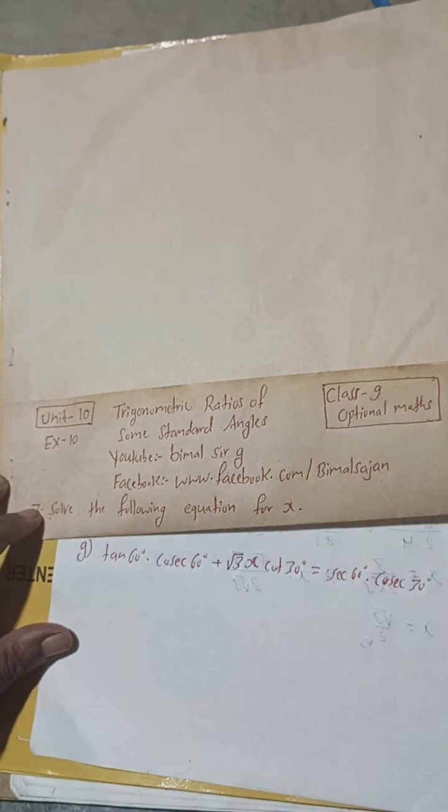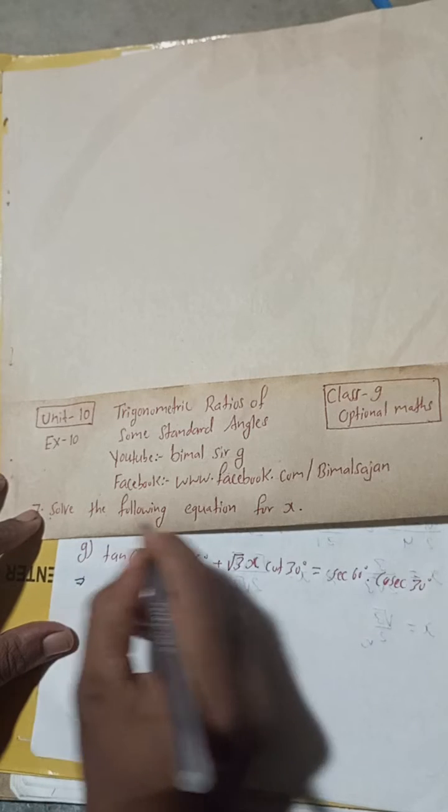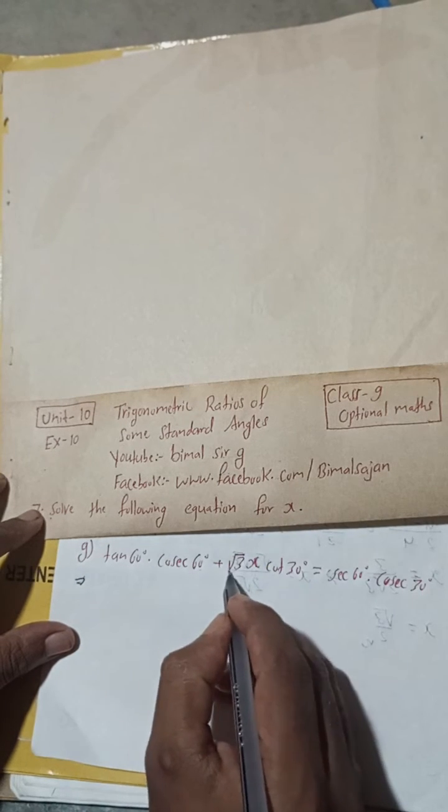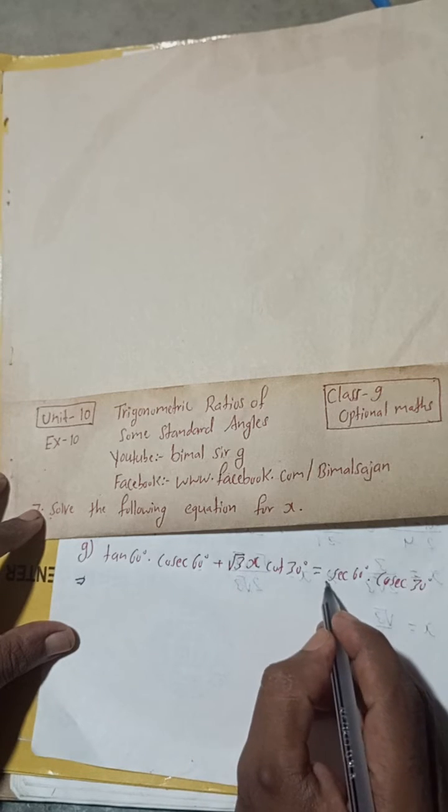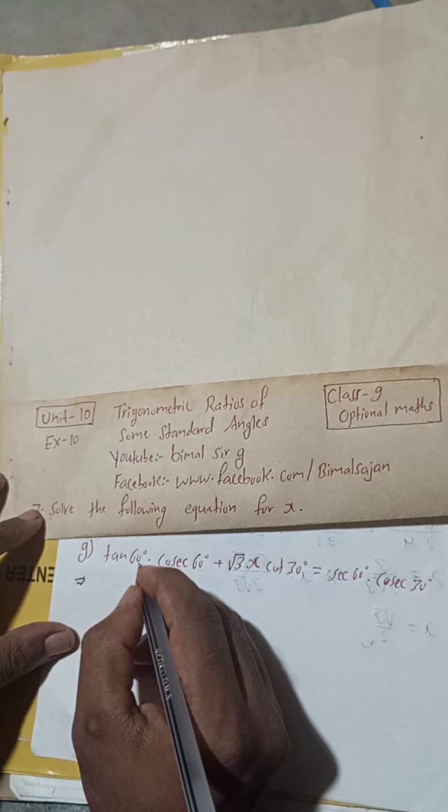Let's begin the solution. Solve the following equation for x: tan 60 degree into cosec 60 degree plus root 3 x cot 30 degree equals sec 60 degree into cosec 30 degree. So tan 60 degree value is root 3 into cosec 60.